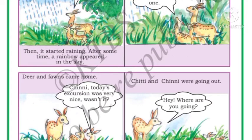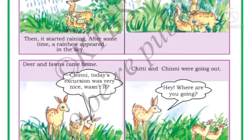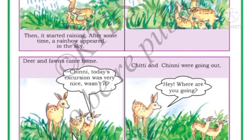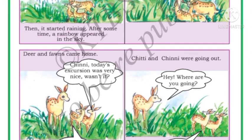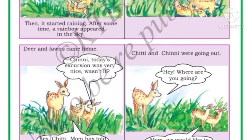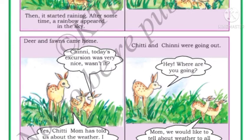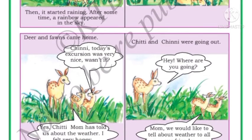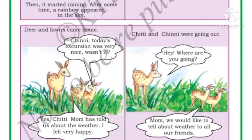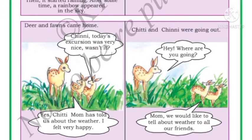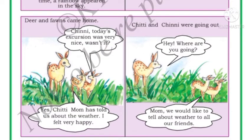Baby deer said, 'Mom, see — what is that colorful thing?' Mama deer replied, 'Oh, that is a rainbow! It appears when it rains in sunlight.' Then the deer and fawns came home. Chitti told Chinni, 'Today's excursion was very nice, wasn't it?' Chinni agreed, saying mom had told them about weather. Then both said, 'Mom, we should tell all this information about weather to our friends!'